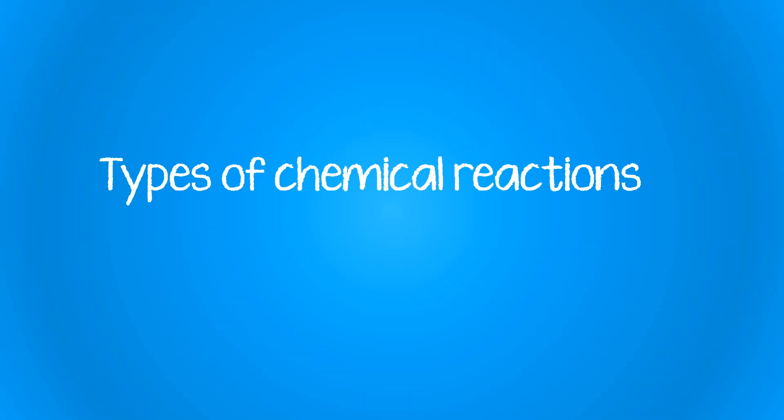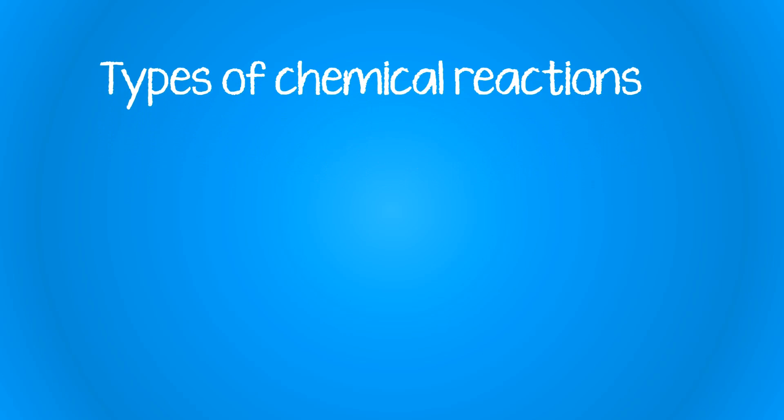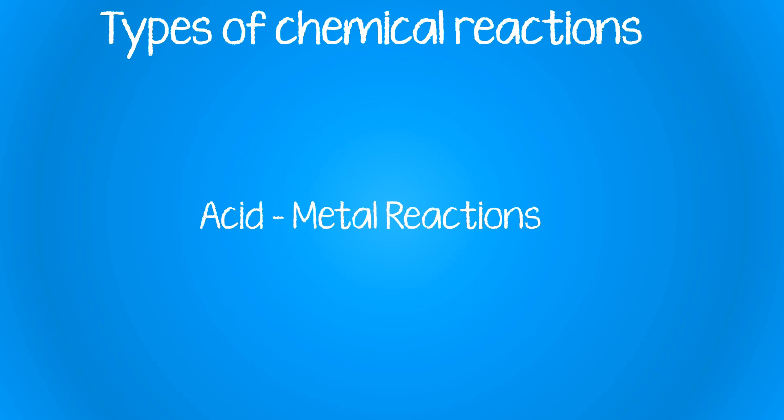Hi everyone, today we're going to be looking at a particular type of chemical reaction, which is that of an acid and a metal reacting. Acids can react in five different ways: they can react with metal hydroxides, metal oxides, metal carbonates, metal hydrogen carbonates, and lastly active metals. We are only going to focus on when they react with active metals.